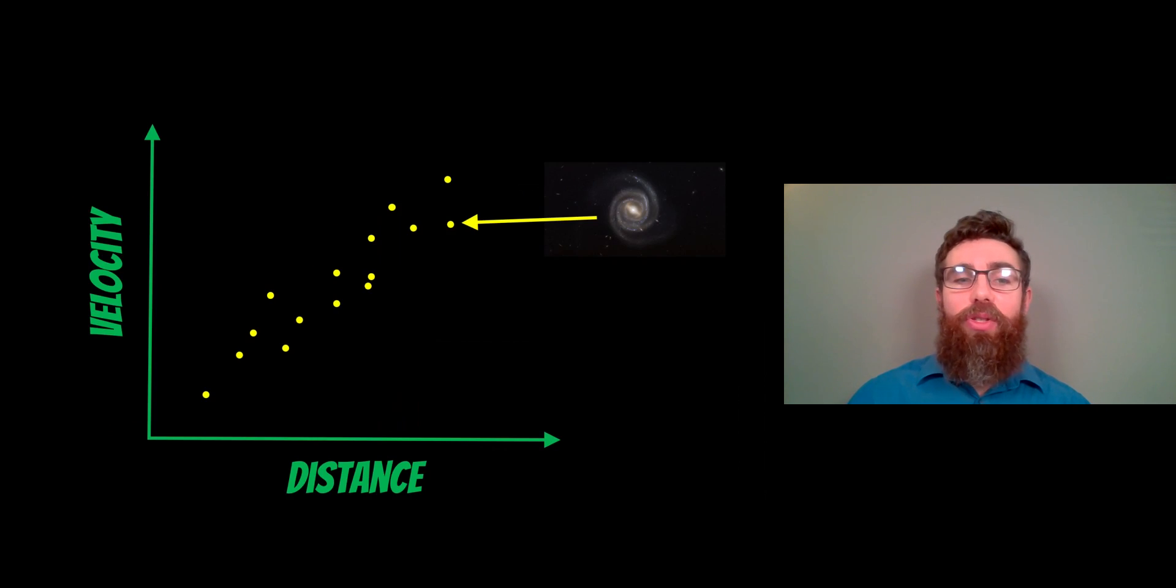Once we have those two, we can actually create a fairly simple plot. If we plot the distance against the velocity for all of those galaxies—if we go get lots and lots of galaxies—we would get something a little bit like this. The yellow pointers are individual galaxies, and we've got a bit of a trend there.